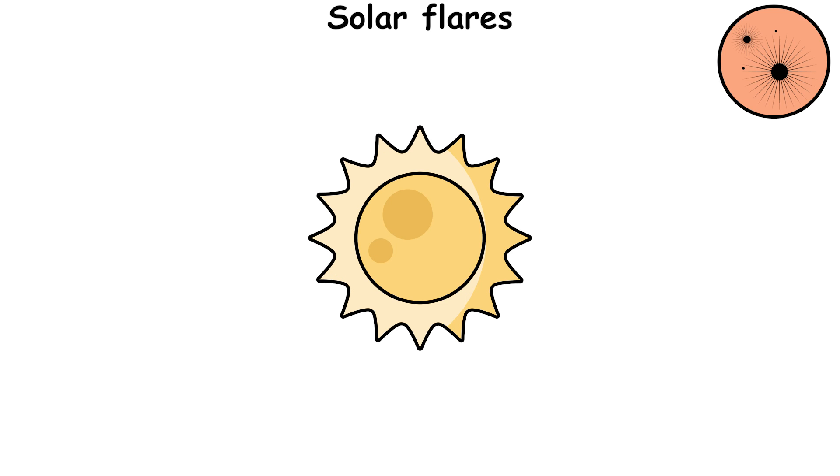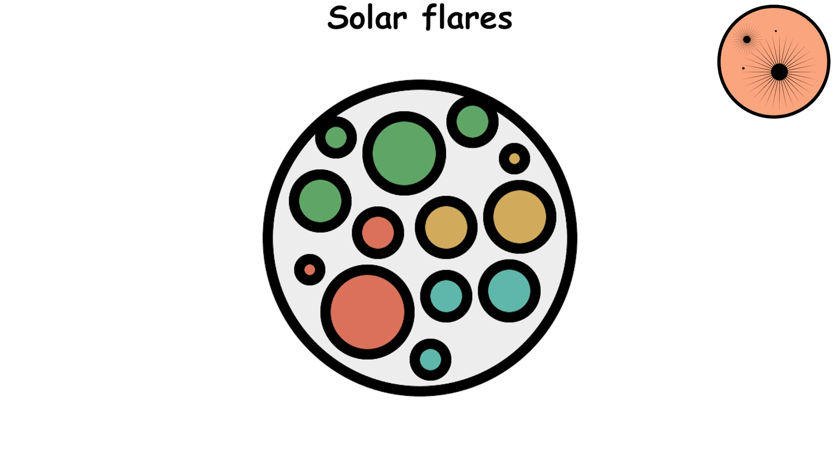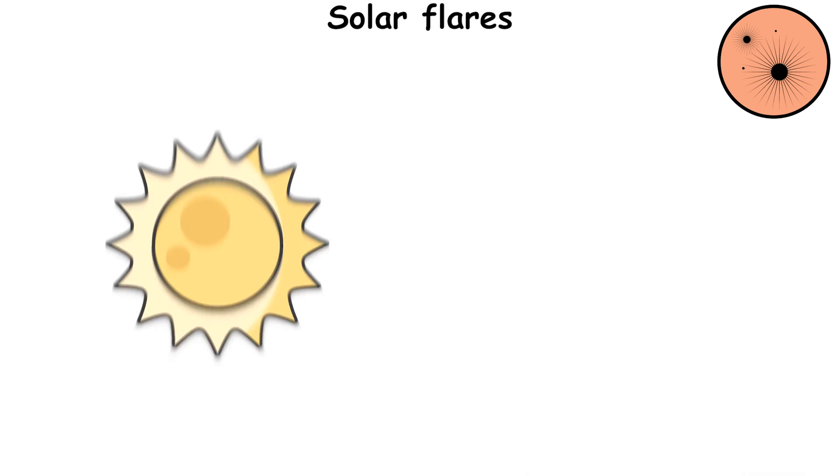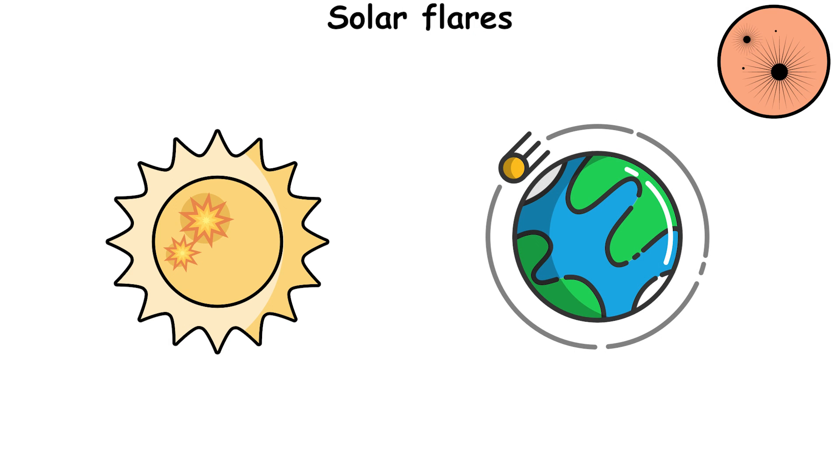They are caused by abrupt local changes in the state of the magnetic field and plasma of the chromosphere and especially of the corona, occurring during the emergence of new or evolutionary changes in the existing magnetic fluxes. All this leads to a thousand-fold increase in plasma density and an unusually strong temperature rise. It is the solar flare activity that is responsible for changes in the state of near-Earth space.